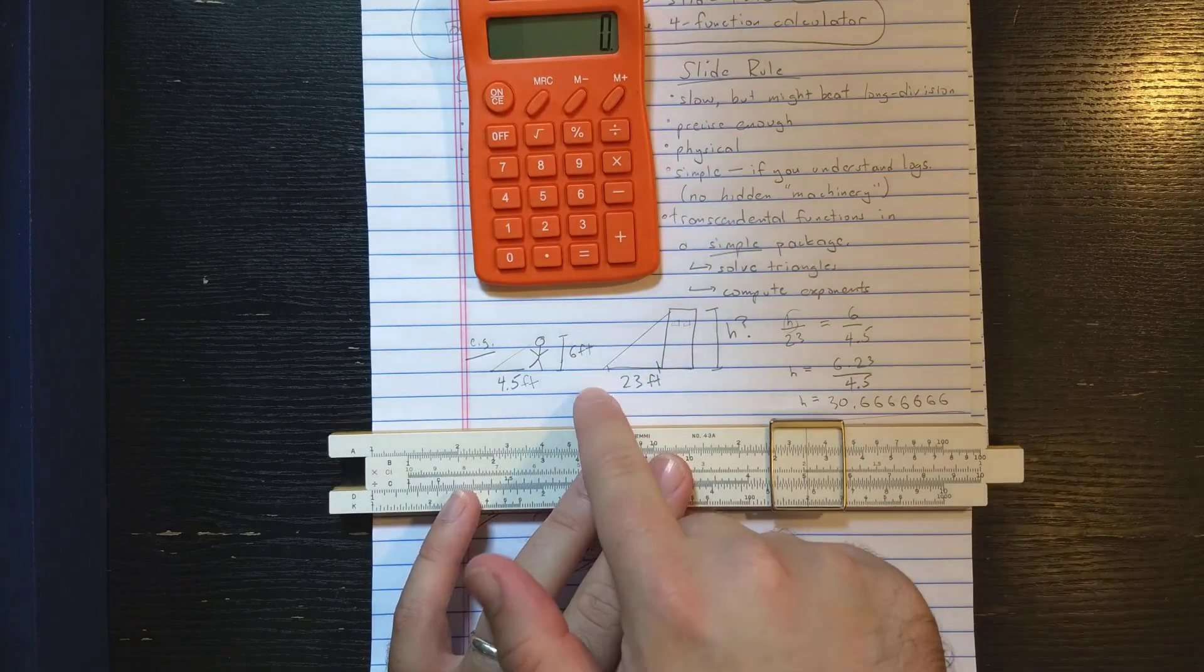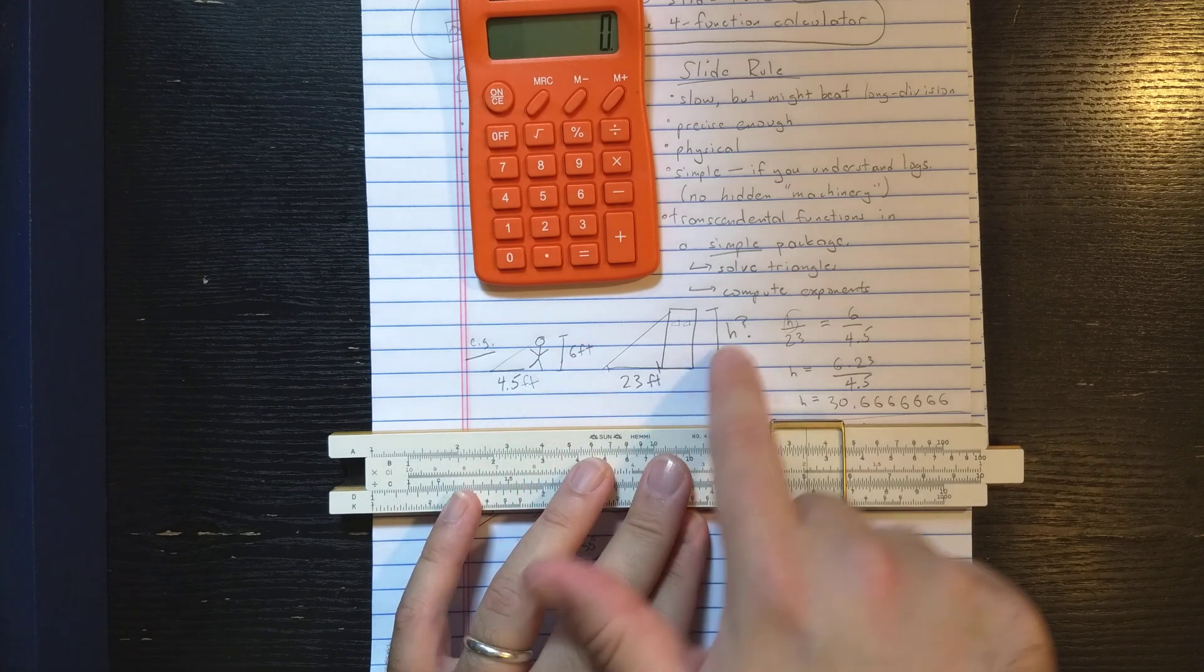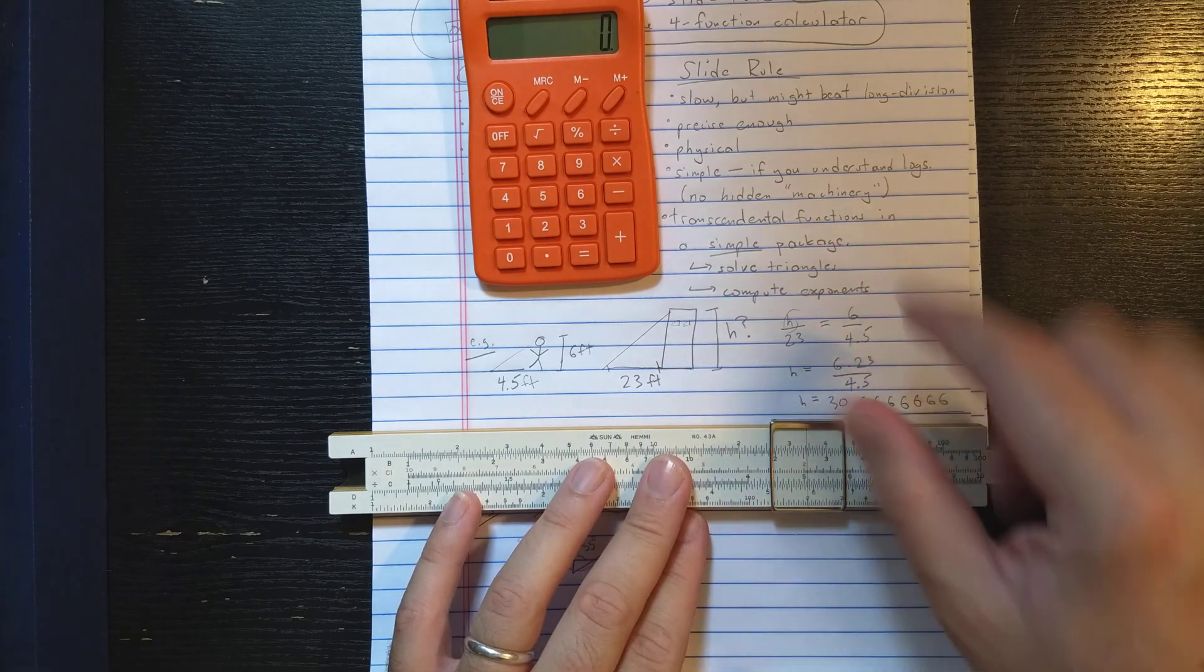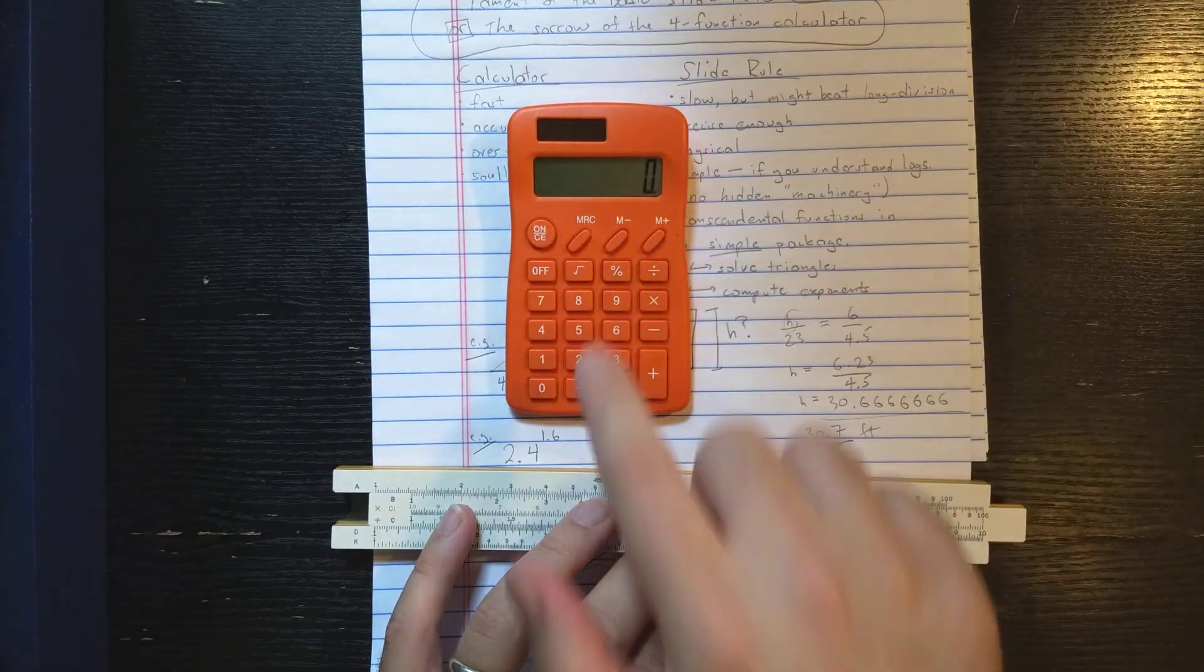You might do, let's say you're trying to solve this proportion and you measure this person's shadow to be 4.5 feet and his height 6 feet. The height of this building is the question here. So we set up a little proportion, then I need to solve that for h, do a little work, and then I'm going to punch that into the calculator.